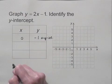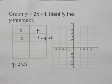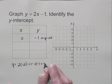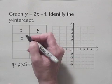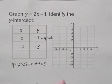When x is negative 2, y is equal to 2 times negative 2 minus 1, which is negative 4 minus 1, or negative 5. So I have negative 2, negative 5.